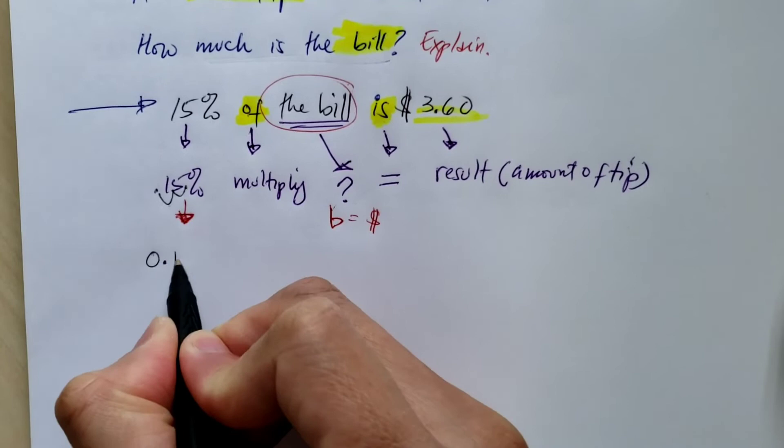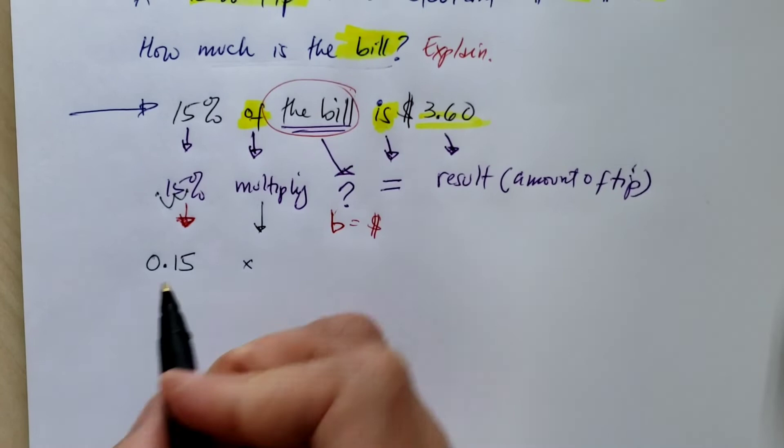The first one is to divide this by 100 or the shortcut one is to move the decimal point two places to the left, one, two, and that becomes 0.15 or 15 hundredths.